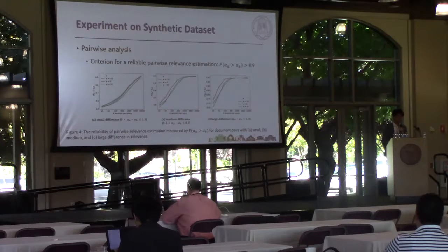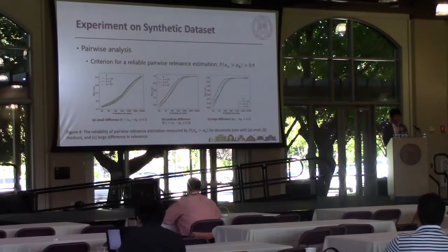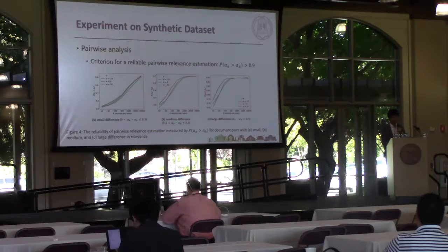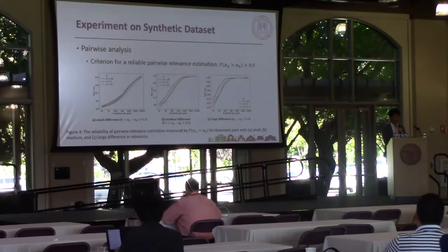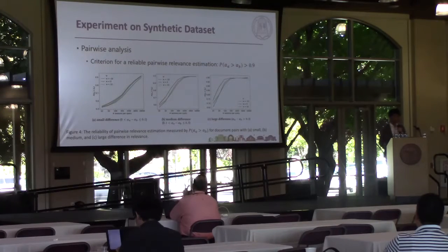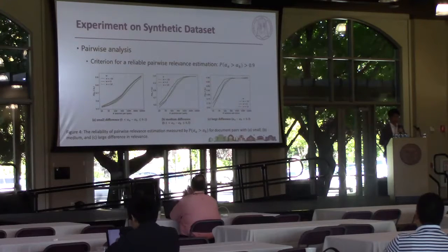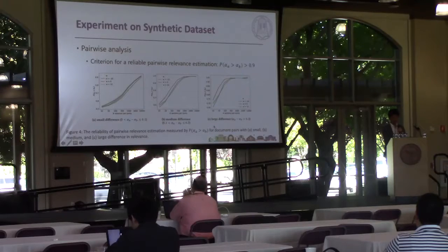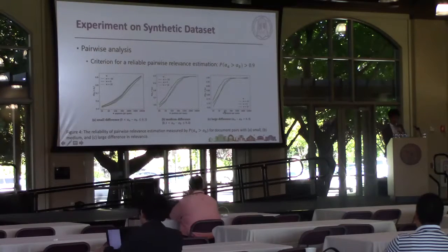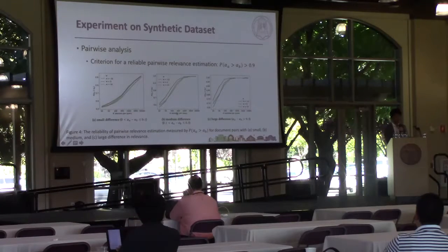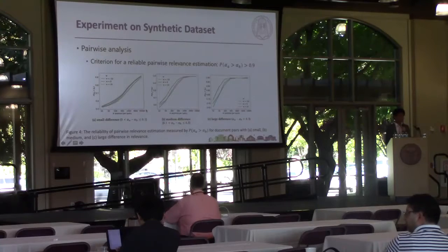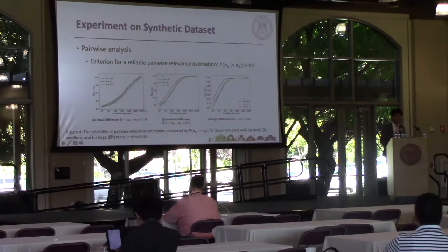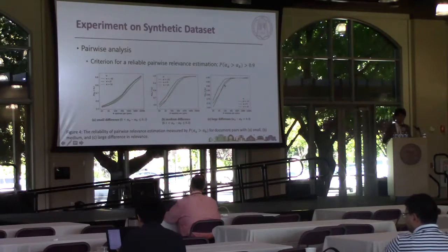We also investigate whether the click model can reliably detect small, medium, and large differences in relevance between two documents A and B. These figures show how the probability P(alpha_A > alpha_B) changes with the number of impressions. If we set the criterion for a reliable pairwise relevance estimation as P > 0.9, we can see that in order to capture large differences, we need around 100 sessions; for medium differences, we need around 300 sessions. However, it is very difficult to capture small differences in relevance — we need over 10,000 sessions to reach the same criterion. We can also see that randomizing the ranking list can lead to more reliable relevance estimation, as the orange line is always on top.